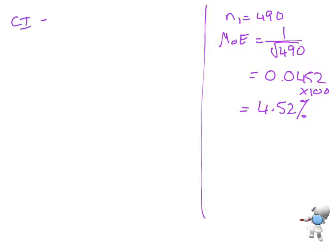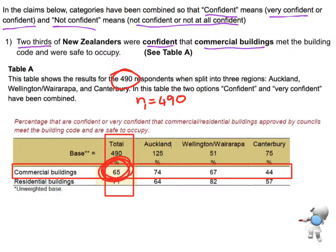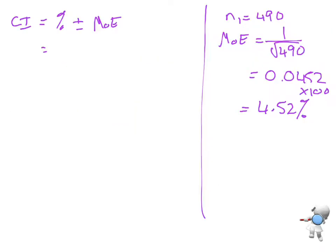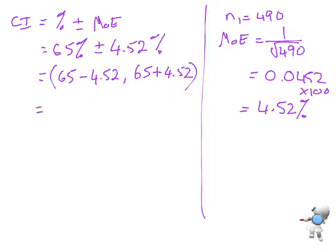So my confidence interval is the percentage plus or minus my margin of error. So in this case, if I go back to the data, our percentage was 65%. So we're going to say 65% plus or minus that margin of error of 4.52%. And now I'm going to make a confidence interval. So I'm going to do the minus one first, 65 take away 4.52, and then 65 plus 4.52. And that will give me a confidence interval of 60.48% and 69.52%.